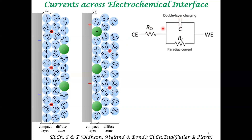That also makes sense. So then there is this other resistor which is in parallel to this capacitor; here it is indicated as R_F, where F indicates Faraday current. What is Faraday current? Faraday current is the current due to electron transfer across the electrode-electrolyte interface — that means there is an explicit electrochemical reaction. The typical electrochemical reaction we consider is an oxidized species O plus N electrons giving rise to a reduced species. So if such kind of electron transfer is possible, we say Faraday current is present.